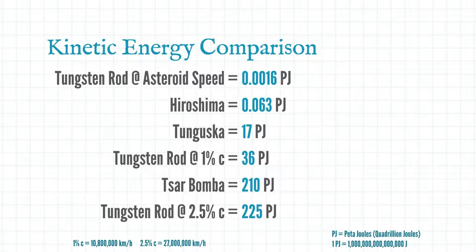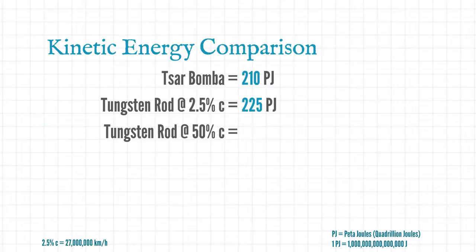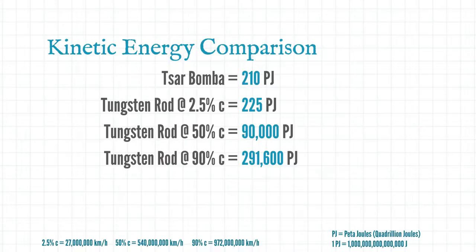But these are rookie numbers. Let's dial this up. At 50 percent of the speed of light our tungsten rod is putting out 90,000 petajoules. Remember that's 90,000 quadrillion joules. And at 90 percent of the speed of light 291,000 petajoules.